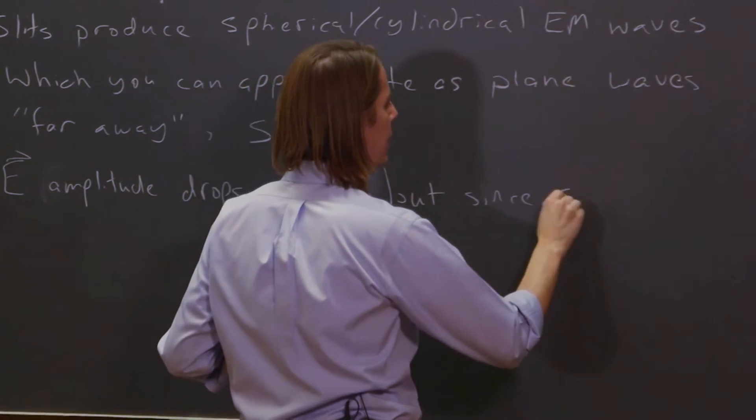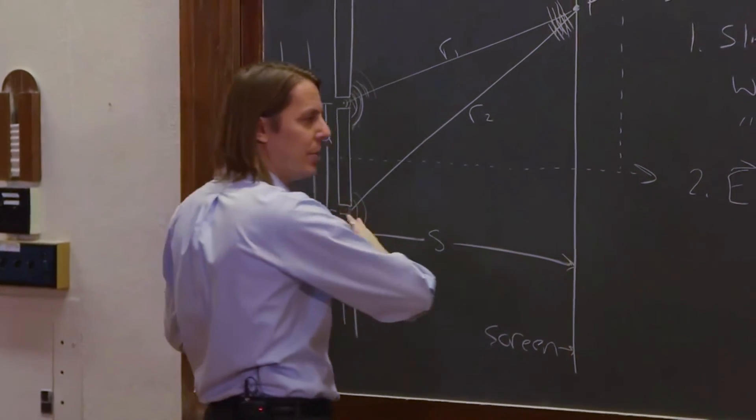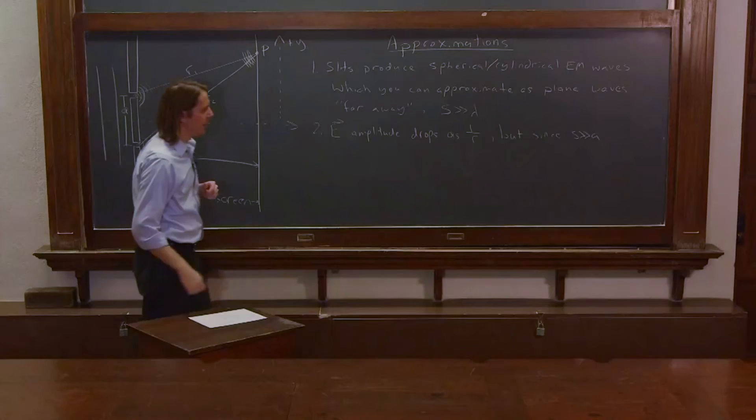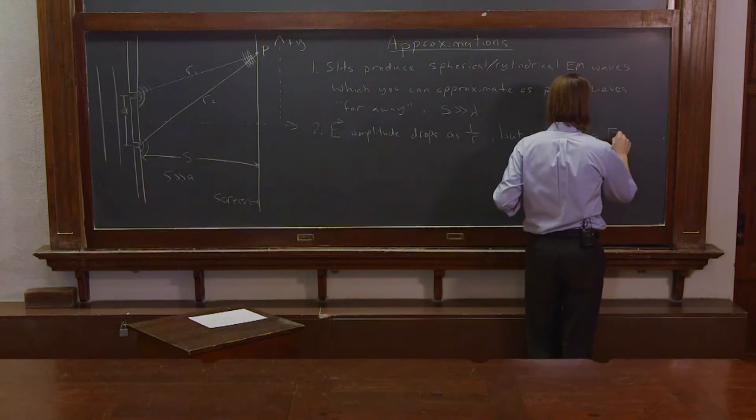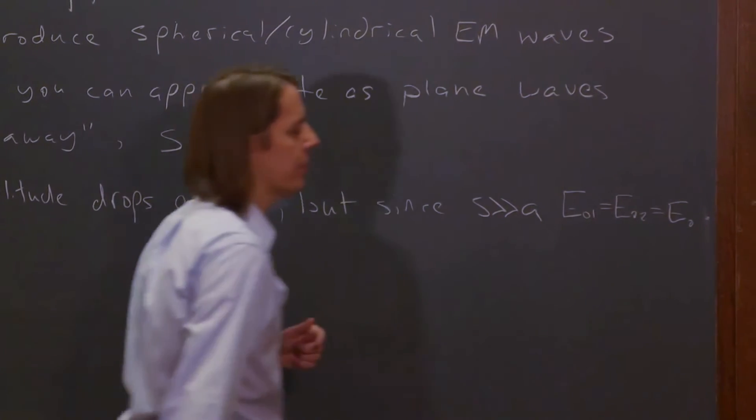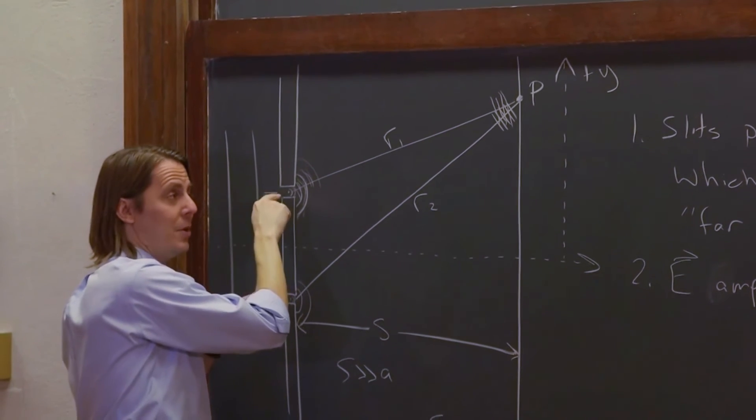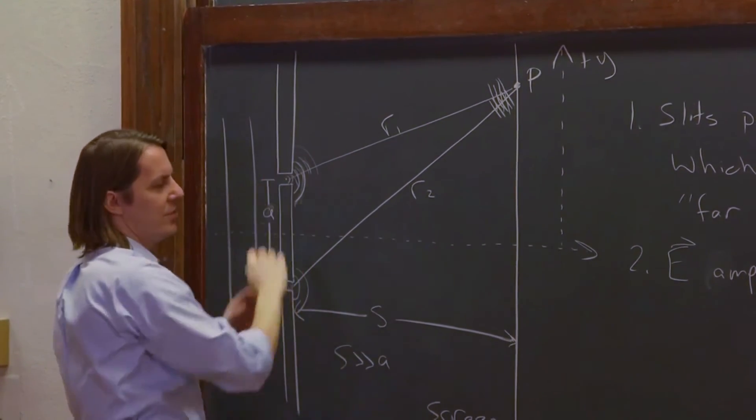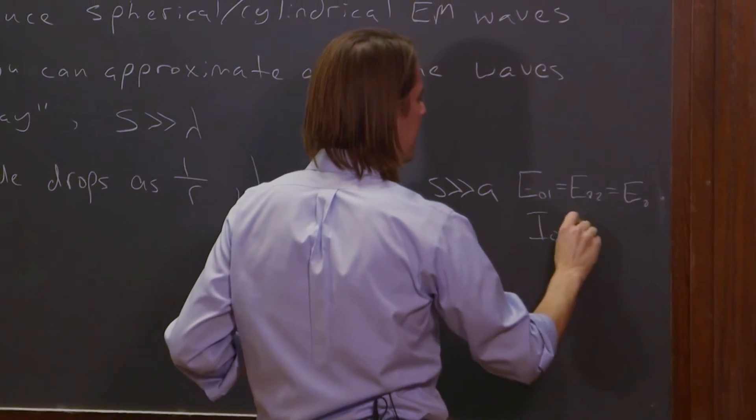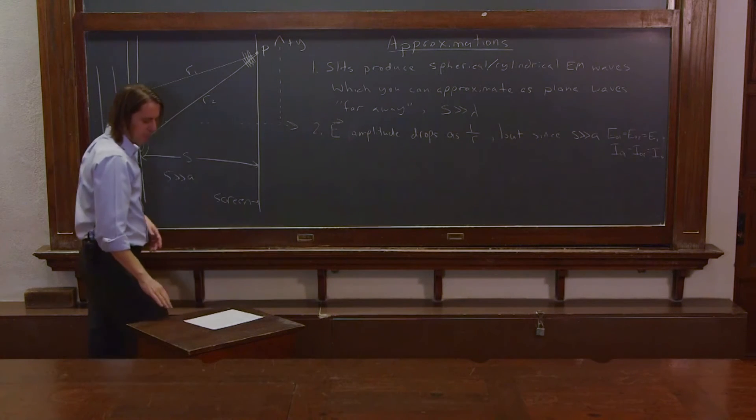But since S is much greater than A, which I haven't told you yet, we have drawn it not to scale. Really you want to think of S as really far away and the slit is really close. So S is much greater than A. But since S is much greater than A, we're going to say that E naught 1 equals E naught 2 equals E naught. By the time you get all the way out here, the E field amplitudes have decayed from what they were when the Huygens wavelet got them started, but they're pretty much the same. This difference in distance isn't significant. Or in terms of our interference formulas, we can say I naught 1 equals I naught 2 equals I naught.